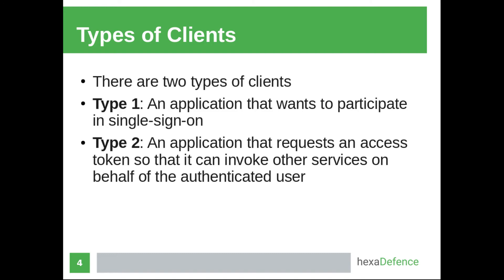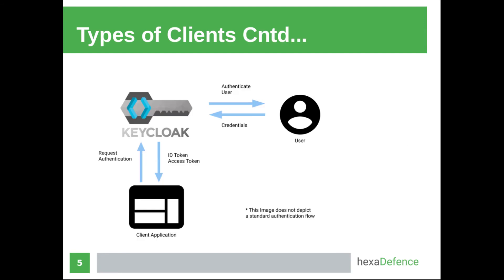There are two types of clients. The first type is an application that wants to participate in single sign-on. This type of application only needs to get a user authenticated through Keycloak and retrieve the user information. Normally, these clients get user information through an ID token. Applications of the second type request access tokens from Keycloak so they can invoke other services on behalf of the authenticated user. On successful authentication, an application might receive an ID token, an access token, or both.